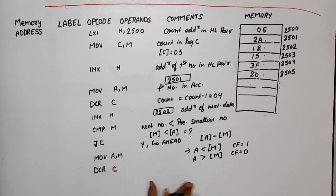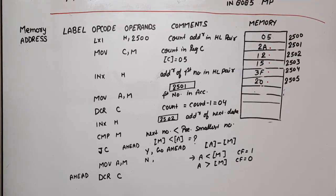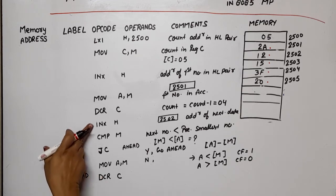We define the AHEAD label here. After decrement, the microprocessor will check if count is zero or not. If not zero, it will repeat the process. If count is zero, it will stop. If count is not zero, where does it go? To the next number.